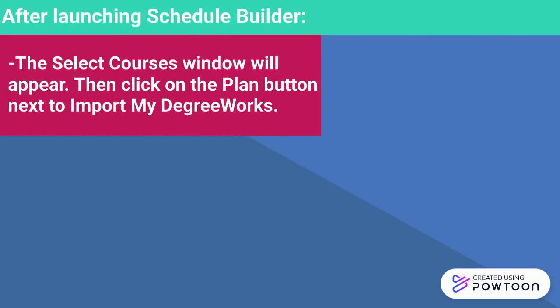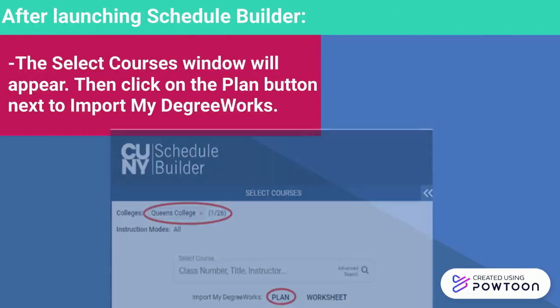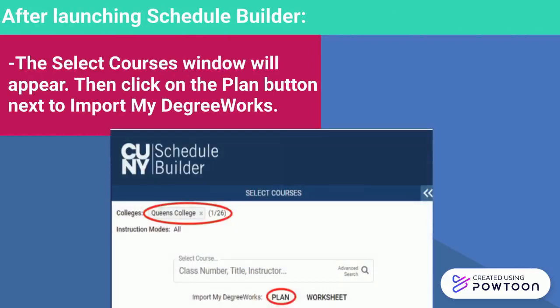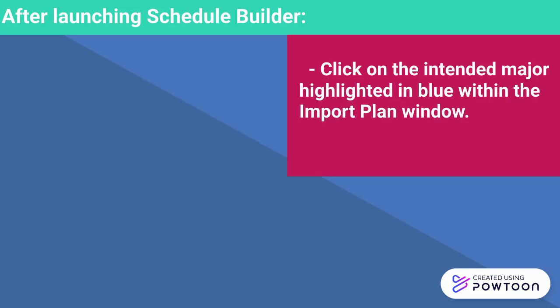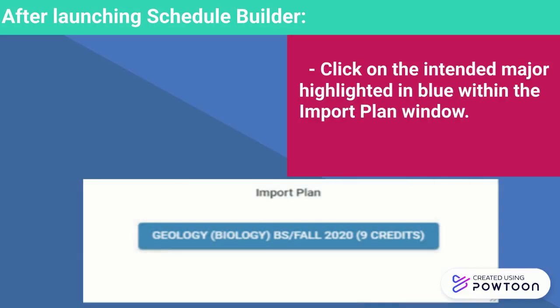The Select Courses window will appear. Then click on the Plan button next to Import My Degree Works. Click on the Intended Major, highlighted in blue, within the Import Plan window.